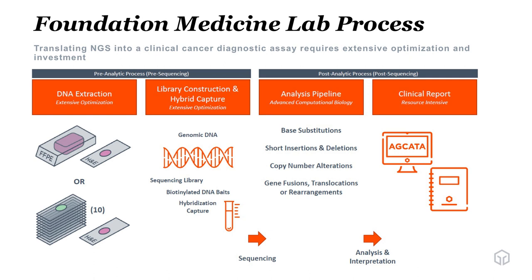We then sequence. The majority of our sequencing occurs on the HiSeq 4000 platform. We then have our analysis pipeline — a custom in-house pipeline that has been developed to call all four classes of alterations. We're able to call base substitutions, short indels, insertions and deletions, copy number alterations, as well as gene fusions, translocations, and rearrangements. All of that is then analyzed, interpreted, and presented into a clinical report in which a clinician can determine the best patient care for their patient.